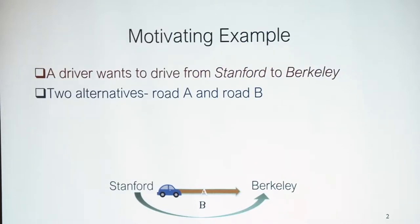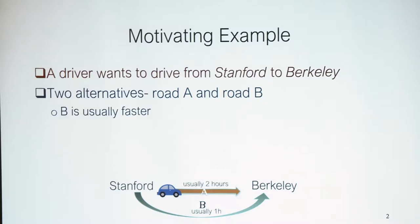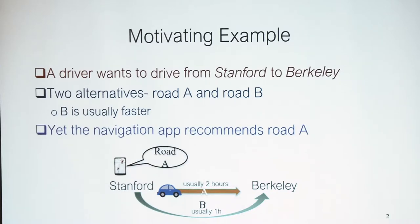Let's start with an example. Say I want to drive from Stanford to Berkeley, and there are two alternatives: Road A and Road B, out of which Road B is usually faster. It usually takes one hour, as opposed to Road A that usually takes two hours.